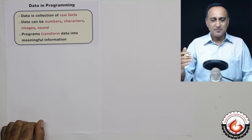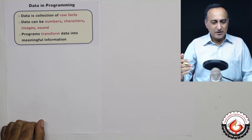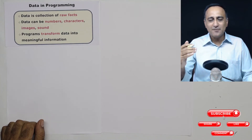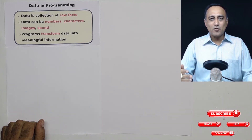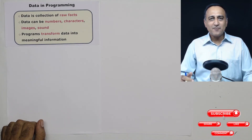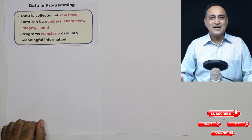The goal of a program is to take this input data and transform it into meaningful information. For example, I may read the heights of all the students in my class — this is just raw data. But if I find the average height of say 50 students, it becomes meaningful information.